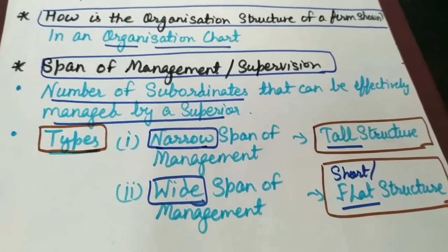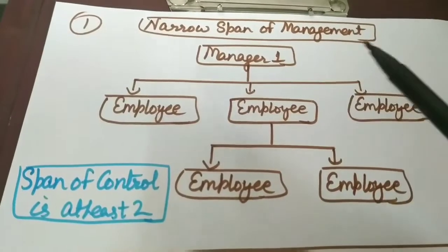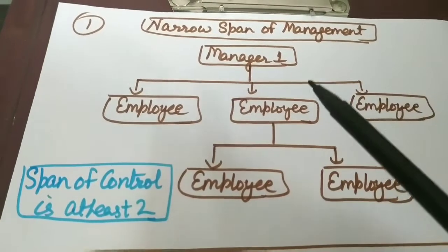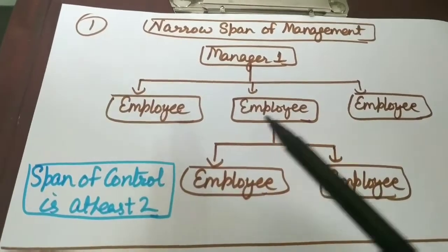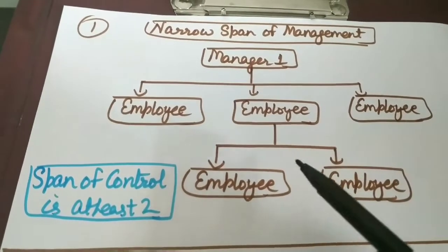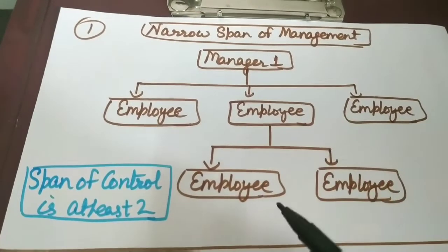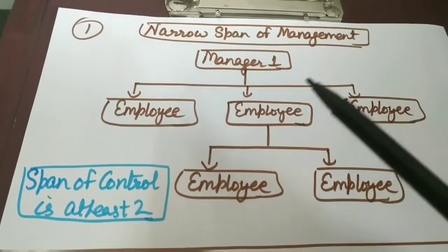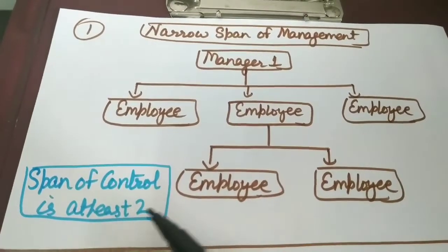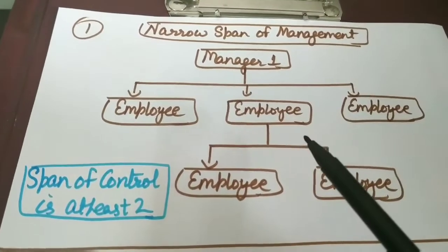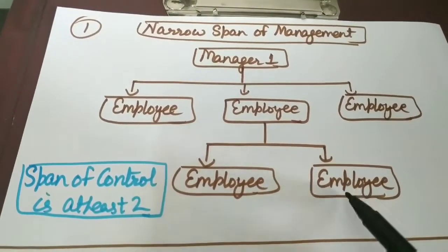Now let us understand different types of span of management in the form of a flow chart. Narrow span of management mein, ek manager ke under three employees are working, and each of these three employees are having two more employees working under them. So this is called narrow span of management. Ye jo hai, ek organization ko tall structure provide kerta hai. In this case, the span of control is at least two, because every employee is managing at least two employees under them.